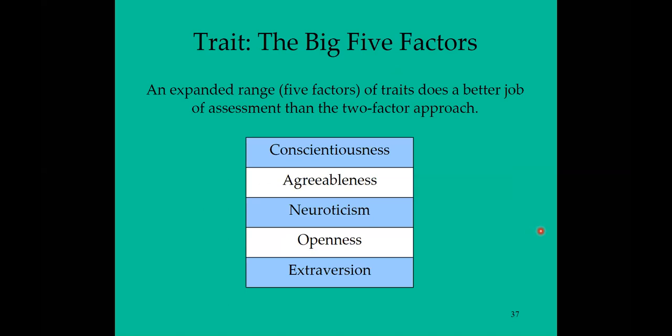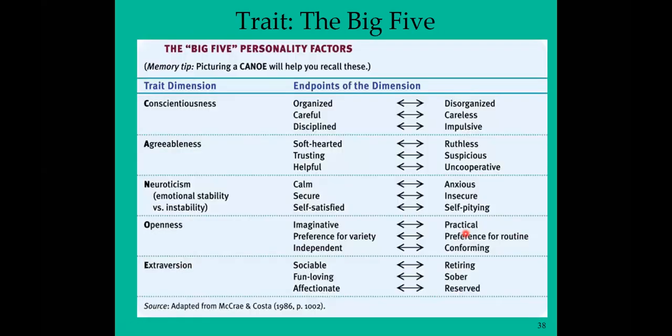What about normal personality traits? The most prominent tools used today are tests identifying the Big Five factors. We had the two-factor theory of Eysenck earlier, and psychologists expanded this to five factors, which does a better job of assessment. What was added was conscientiousness, agreeableness, and openness to experience. If you're trying to remember those, the word CANOE can help cue each of the individual ones.